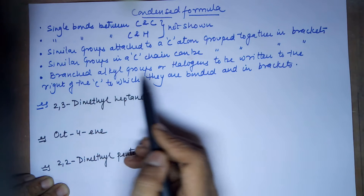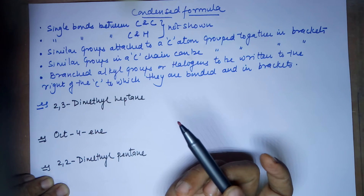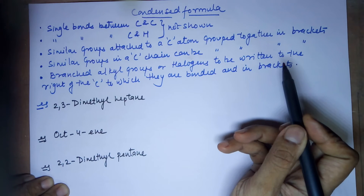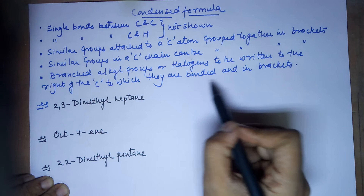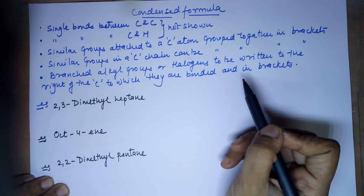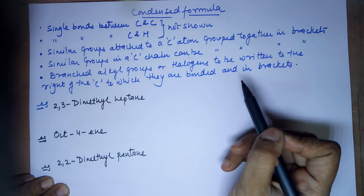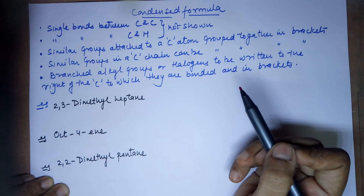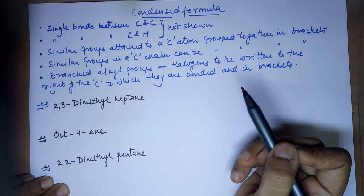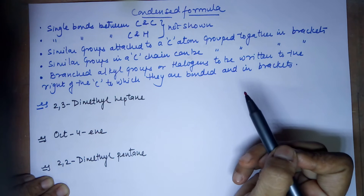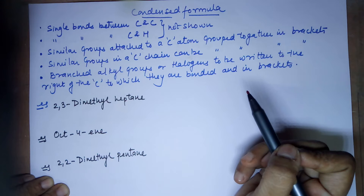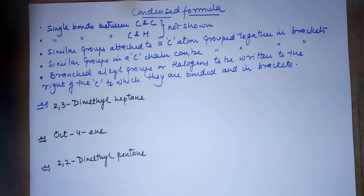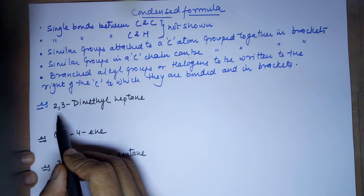For branched alkyl groups — if you have a parent chain with branches of a methyl group, ethyl group, or halogens — these are to be written to the right of the carbon to which they are attached, and in brackets. The condensed formula is always horizontal; you will not have branches hanging out of it. These branches need to be mentioned in that horizontal format, placed in brackets.